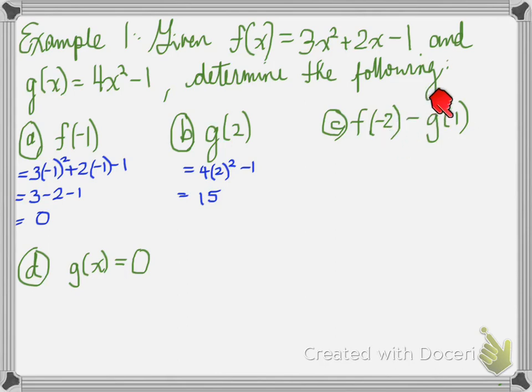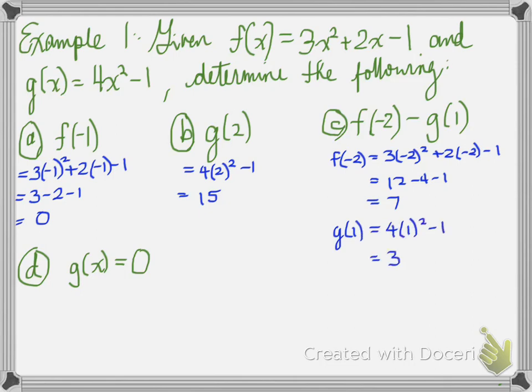Now f at negative 2 minus g at 1, what is that saying? That's right folks, the negative 2 gets replaced in the f equation and the 1 gets replaced in the g equation and then we subtract that. Okay, one step at a time. So f at negative 2 is equal to this value. g at 1 is equal to this value.